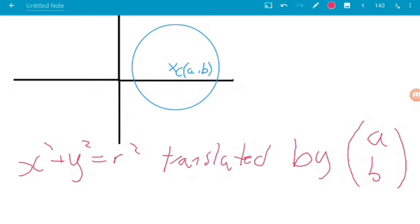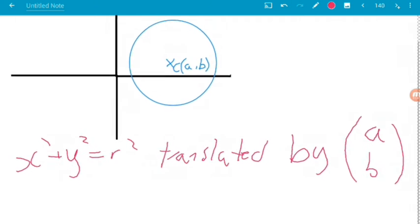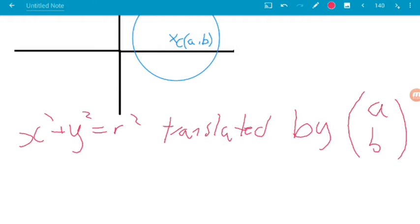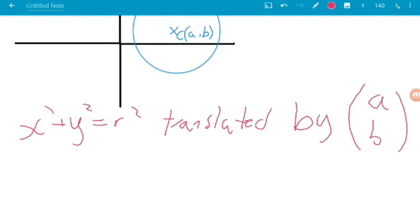Well, given that our equation here is made up of a function of x and a function of y, we transform both of those separately. So, to move the x-coordinate A places along, we would need x minus A squared.